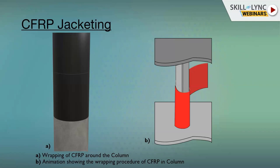CFRP jacketing is one of the most important methods being used today. For example, after the tsunami in Indonesia, approximately 1,300 columns in a flyover spanning about 7.4 km were damaged by the earthquake. Engineers subsequently wrapped all the columns with carbon fiber reinforced polymer to make the structure safe for the next 20 years.